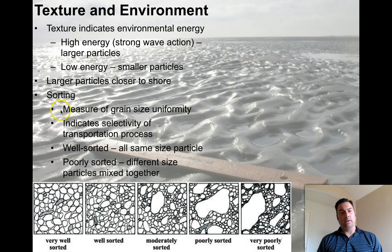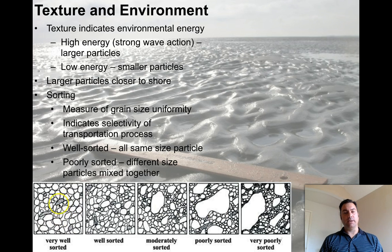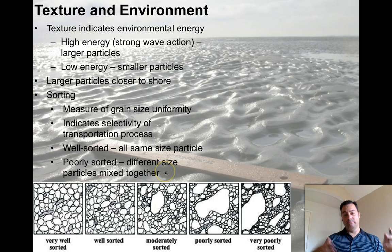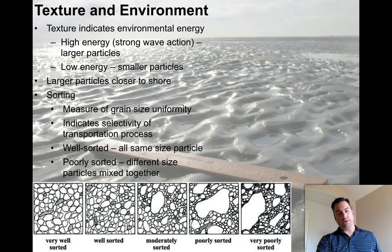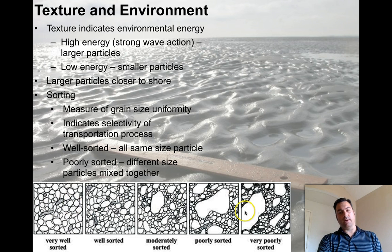Sorting is an important property — it's the measure of grain size uniformity. Very well sorted means all the grains are about the same size. Moderately sorted, poorly sorted, and very poorly sorted means very small stuff alongside very large grains. Well sorted means all the same particle size; poorly sorted means it's all mixed together. It indicates the selectivity of the transportation process — some rocks like sandstones are well sorted, whereas turbidity current deposits can be relatively poorly sorted.